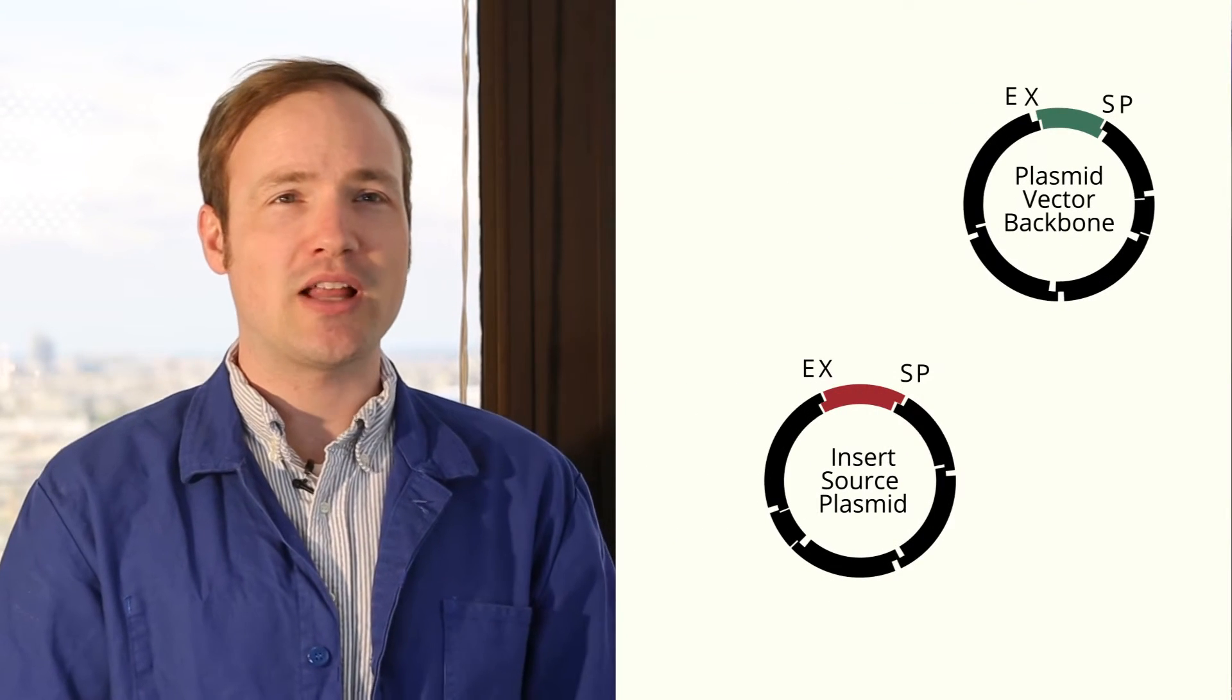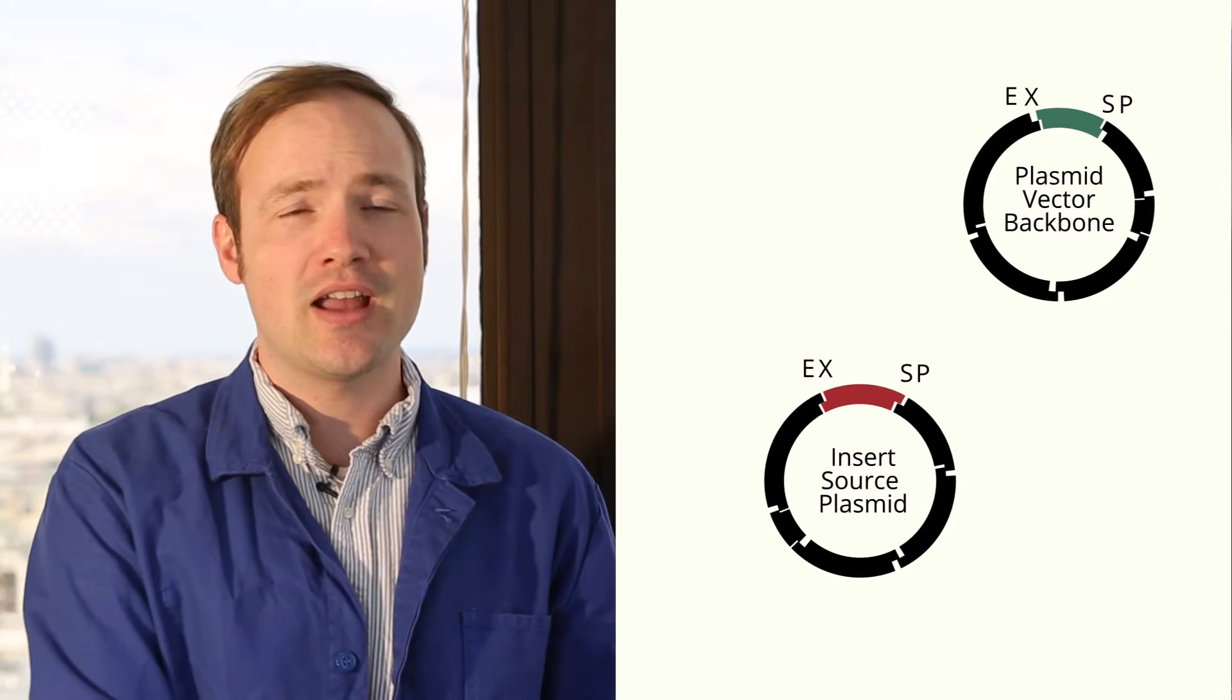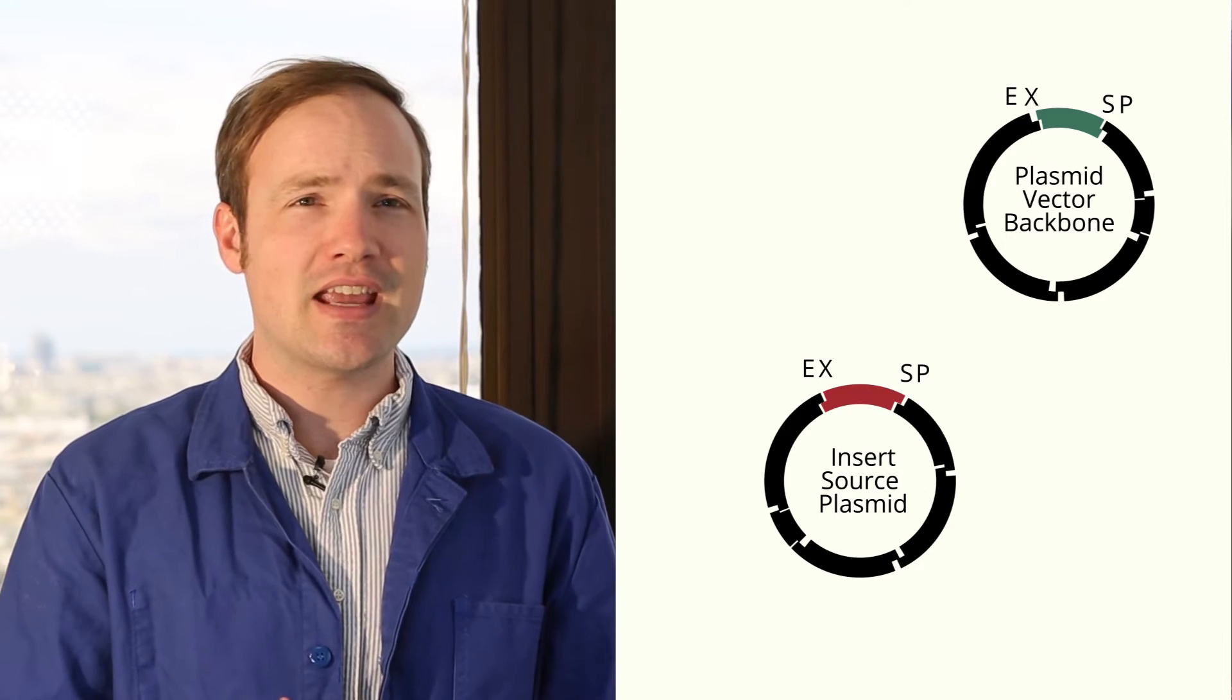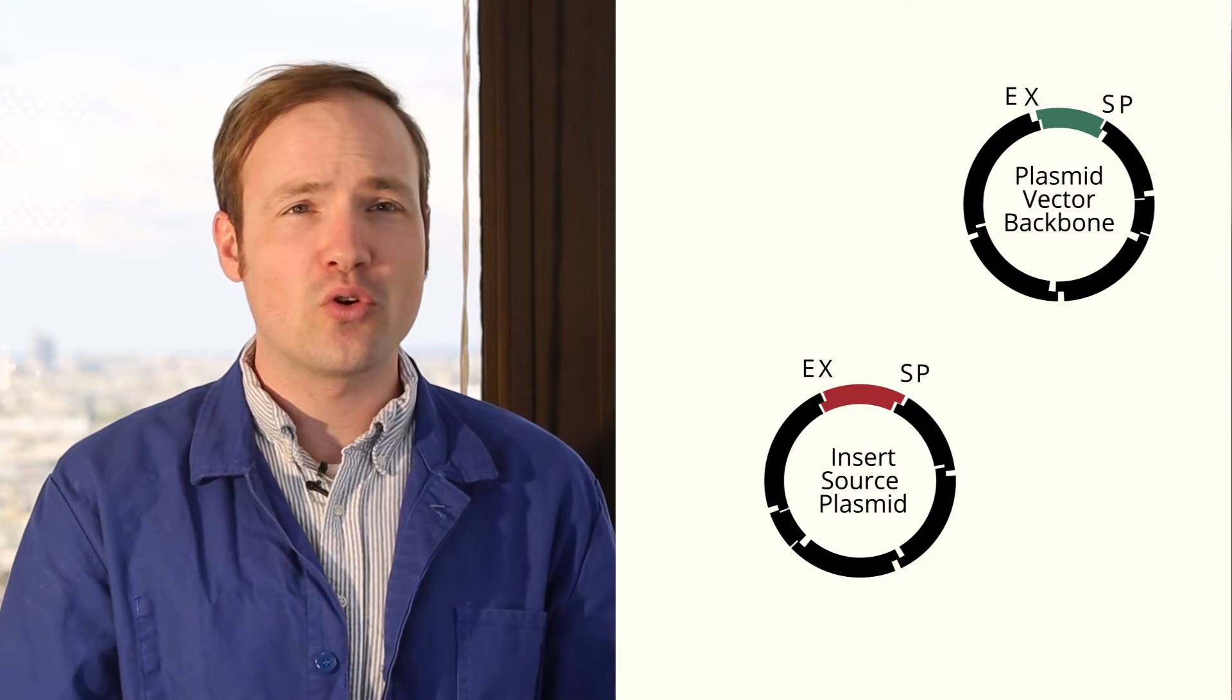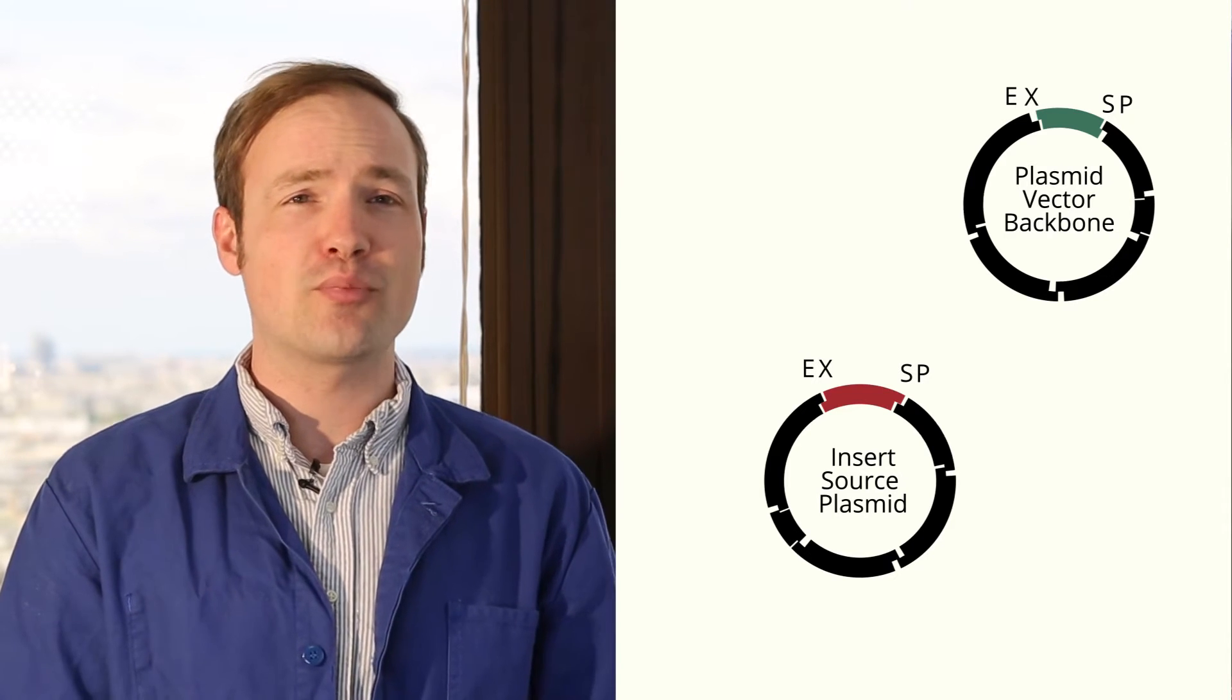Here are two biobrick plasmids. We're going to cut this biobrick, which we call the insert, and paste it into the other plasmid, which we call the vector backbone. In this case, we want to put the new biobrick before or in front of the existing biobrick, which we call a prefix insertion.